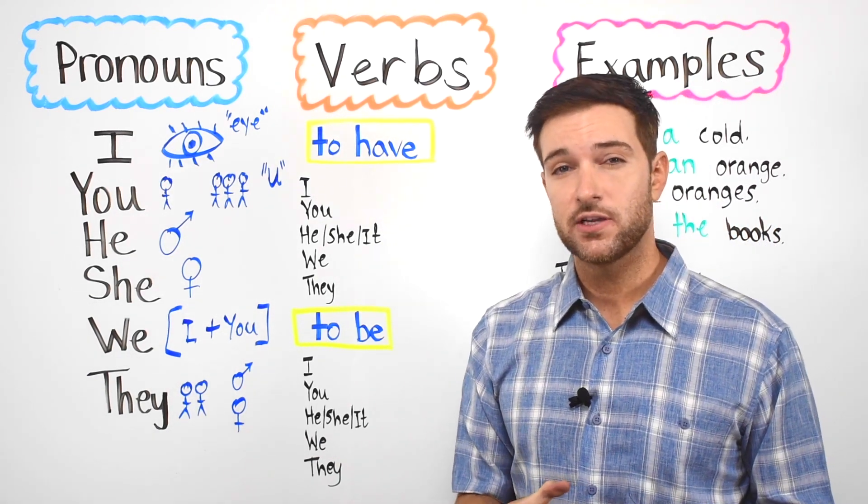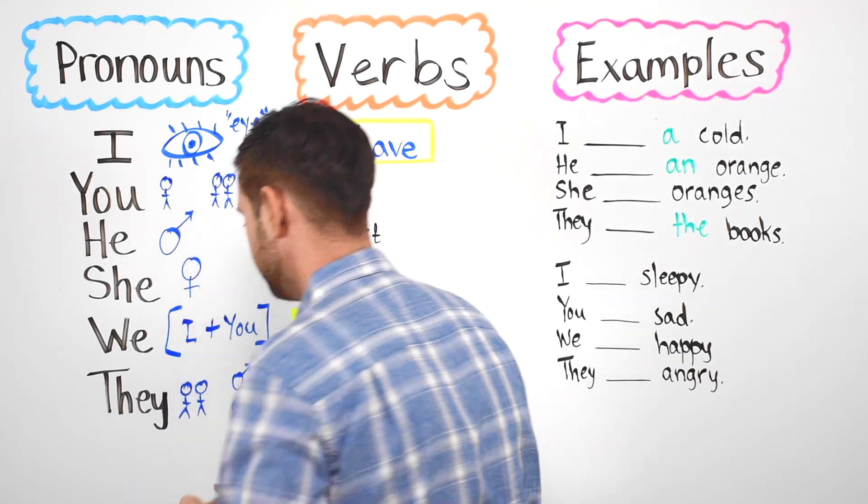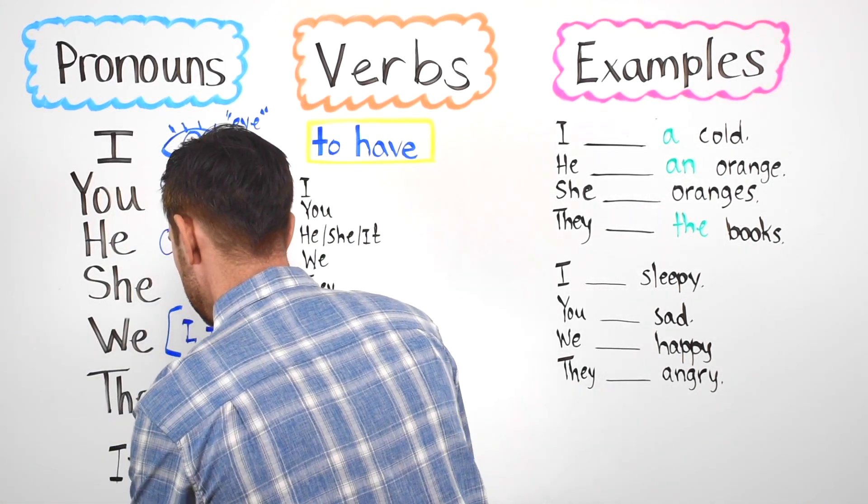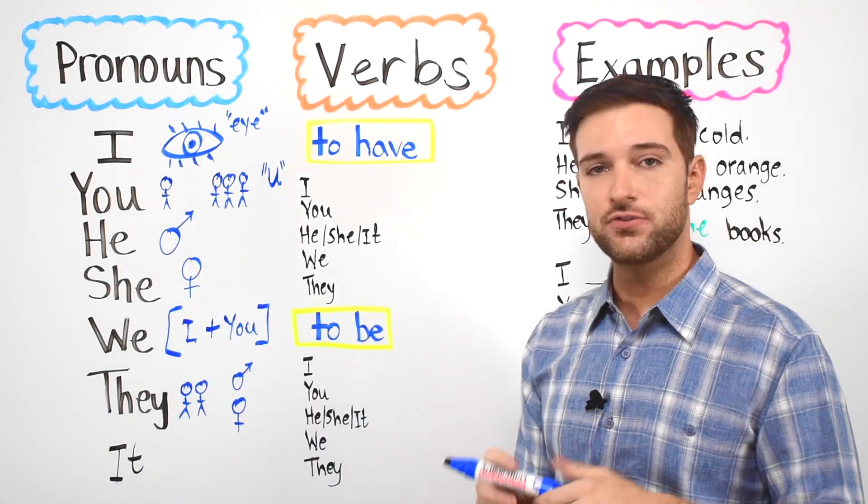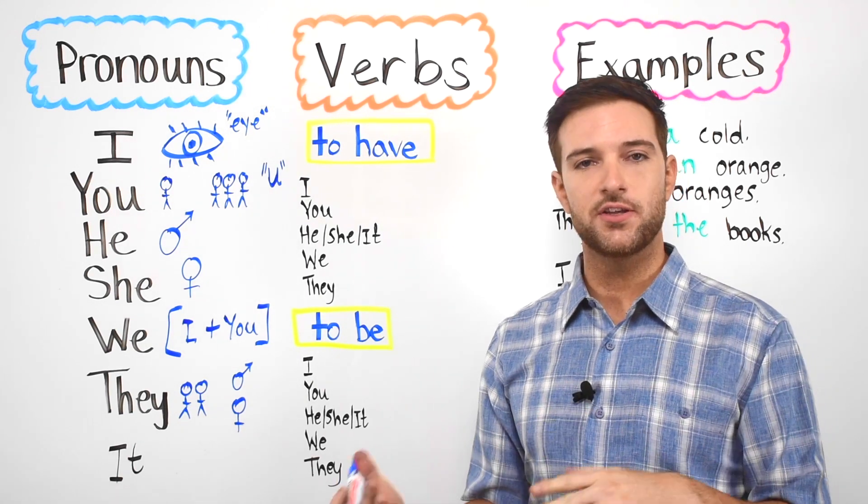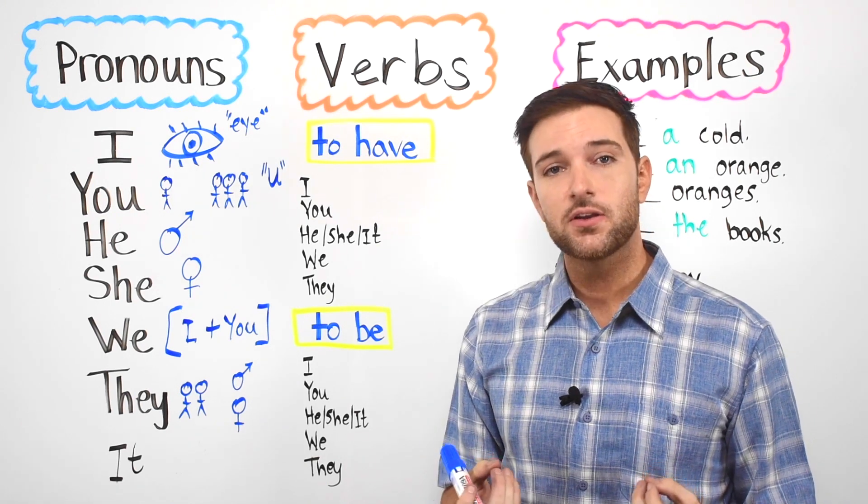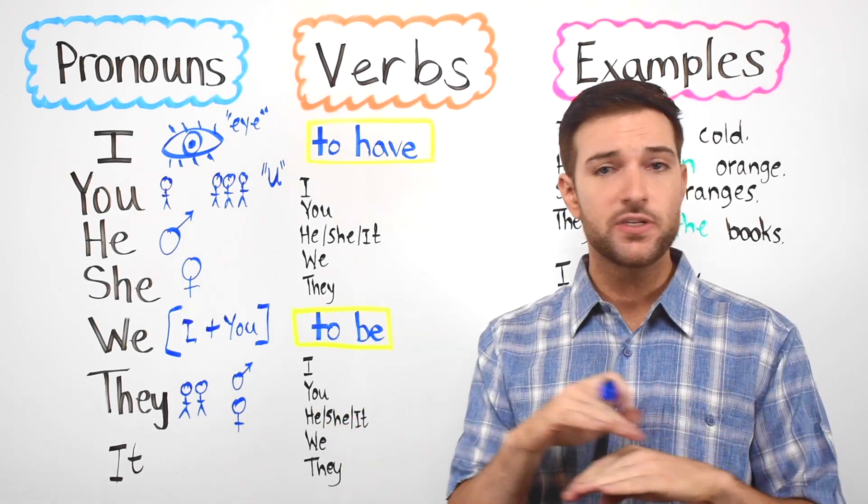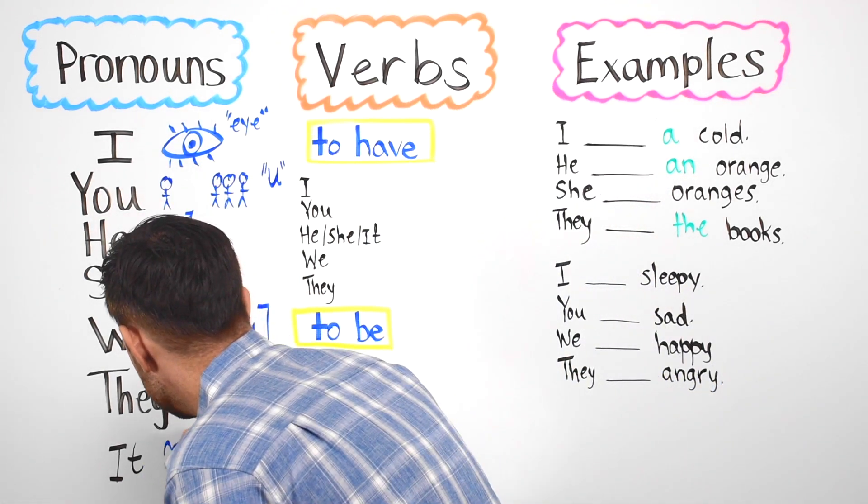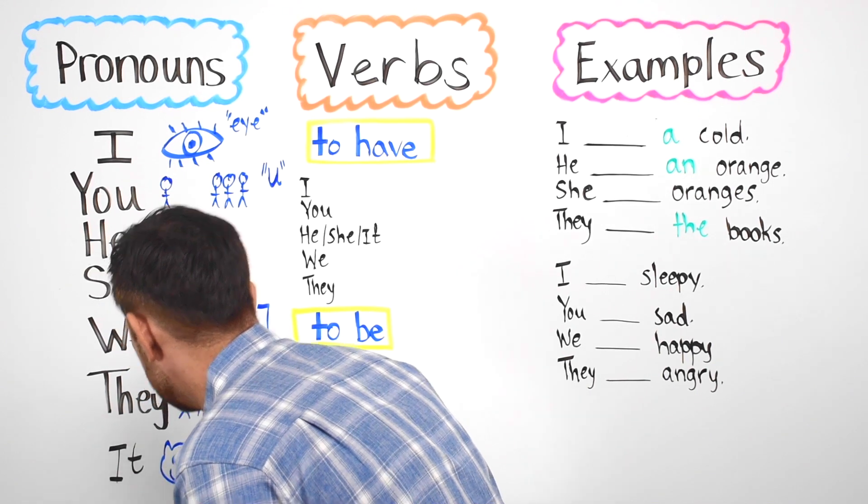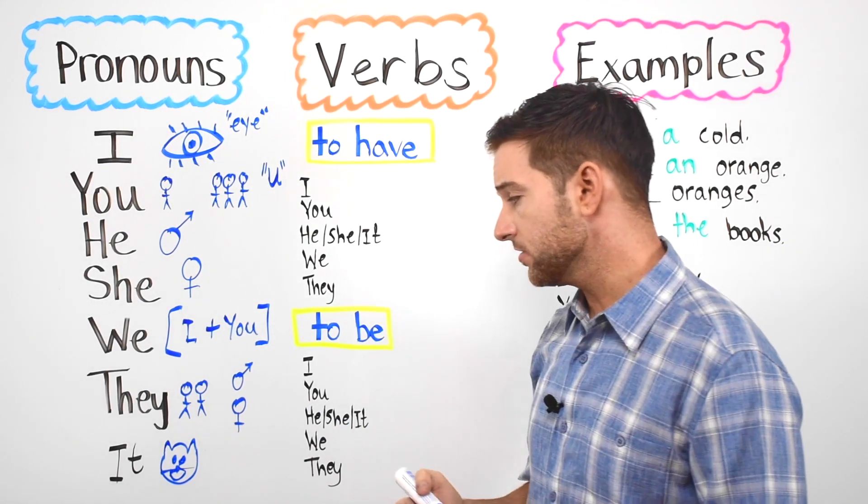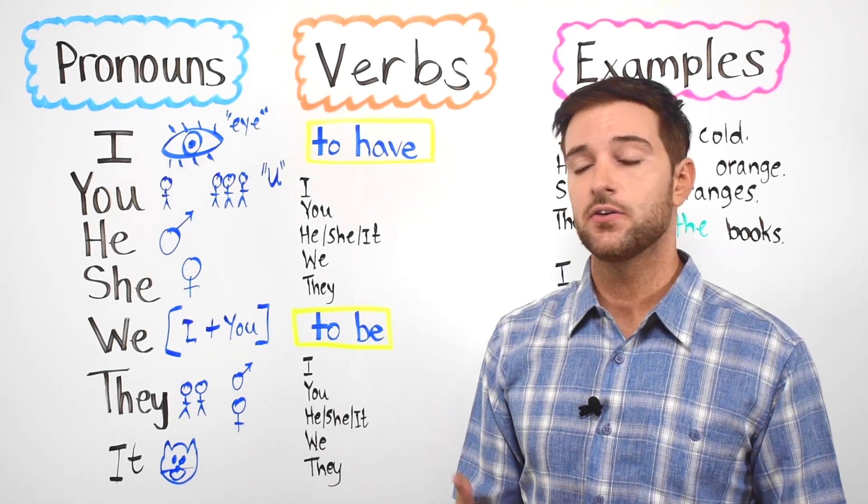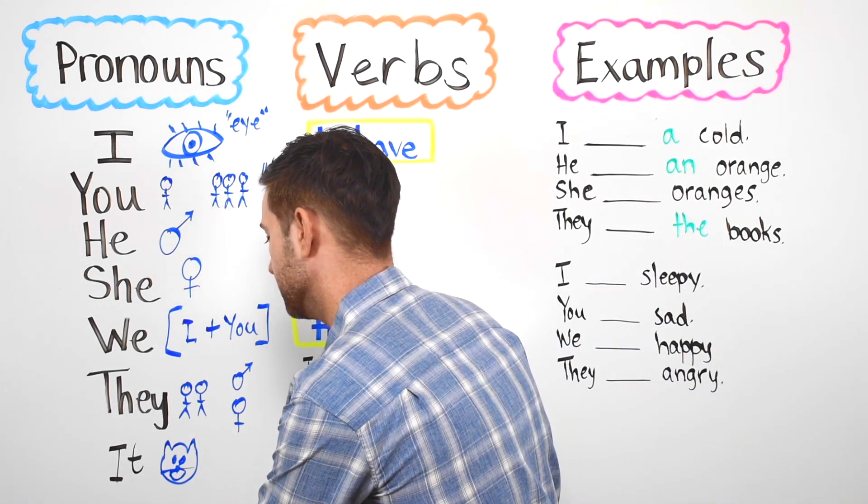We also have another pronoun in the English language guys. The pronoun is it. Now we use it to talk about things that do not have gender. In other languages such as French and Spanish and Italian, there exists something called gender. Meaning nouns are attributed a certain quality either masculine or feminine. In English we do not have that. So it is used for things such as animals, like cats or dogs. Or it can also be used with other nouns, such as places like a city like San Francisco, or the country of Canada. It is a nice place.